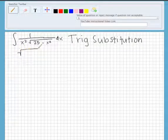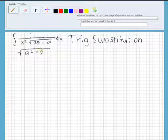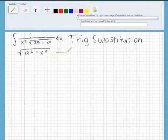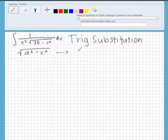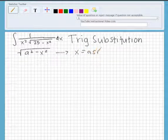So we know that when you have a squared minus x squared, you will be using x equals a sine theta.